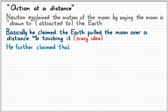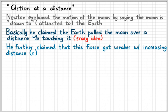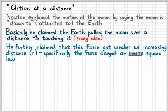He further claimed that because the effect of the earth on the moon would get weaker as the earth and moon were farther apart, he said that this force was inversely proportional to the distance. More specifically, he claimed that it obeyed an inverse square law. What that means is that it is proportional to one over the distance squared. And so, when you see the term inverse square law, that's what that means. One over r squared.